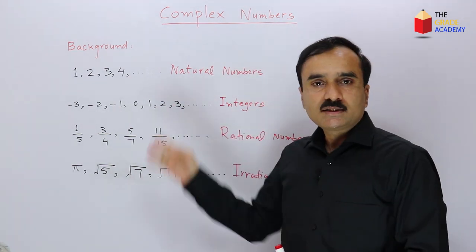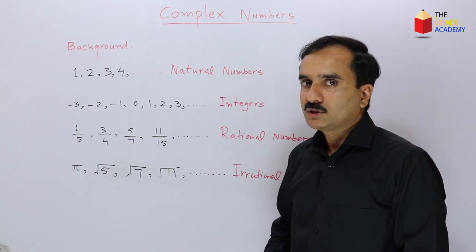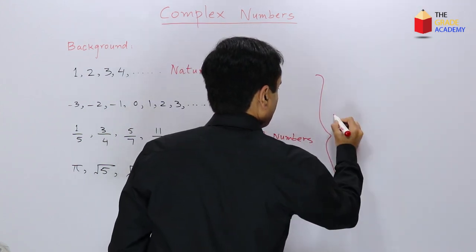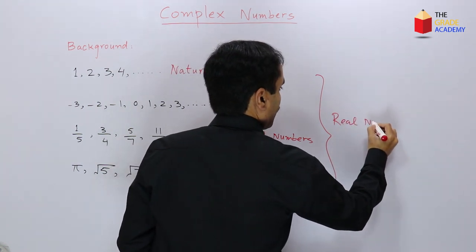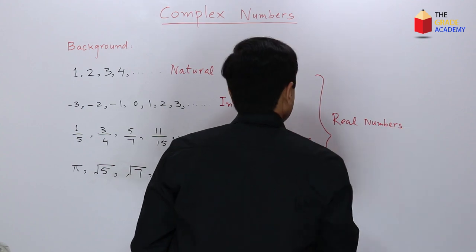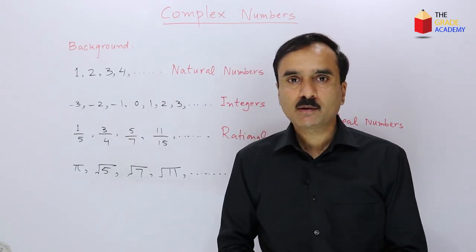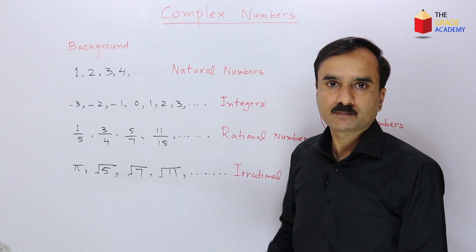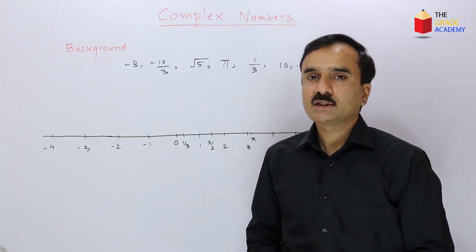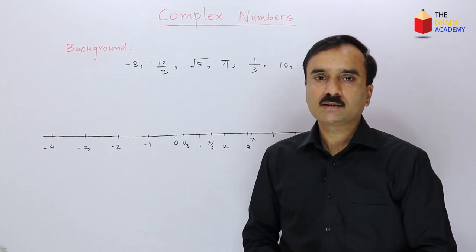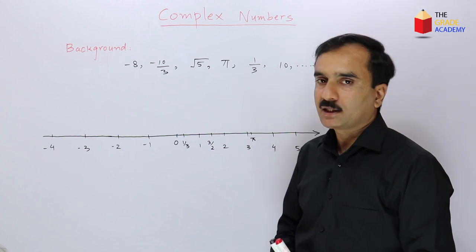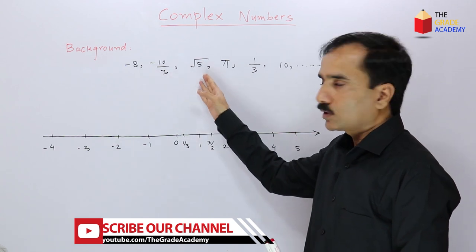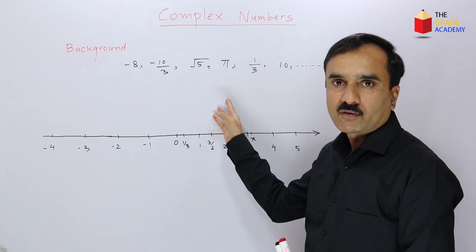If we combine all these systems of numbers, we get a new set called the set of real numbers. The set of real numbers is a pretty much complete set of numbers which fills all the gaps that existed in the previous sets. Any number that we write in our daily problem solving — for example, negative 8, negative 10/3, square root of 5, pi — all these numbers are real numbers.